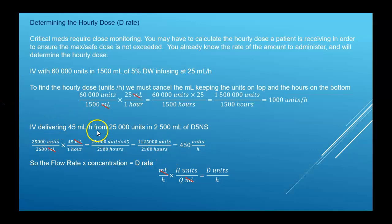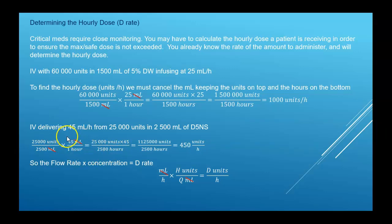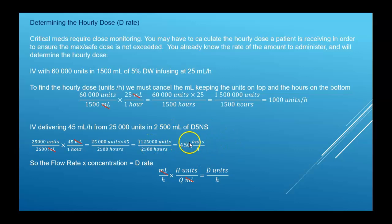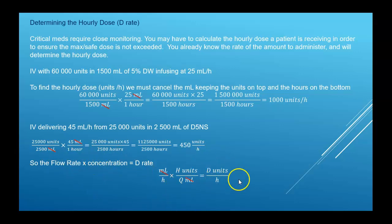For a 45 milliliter per hour flow rate with a bag of 25,000 units in 2,500 milliliters: here's the flow rate in milliliters per hour, and the concentration in units per milliliter. Milliliters cancel; multiply across the top and bottom to get the D rate in units per hour. The flow rate times the concentration — in either order — gives you the amount of drug over time, which is the D rate.